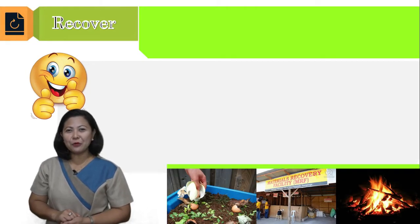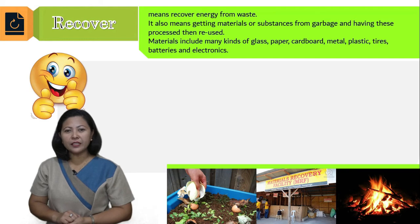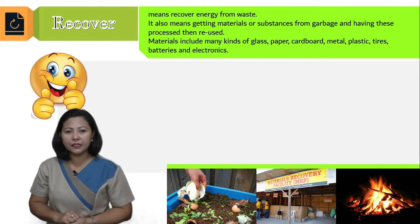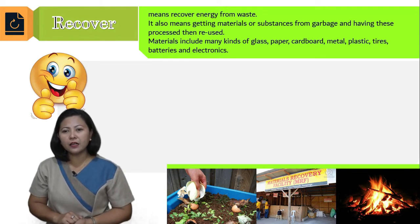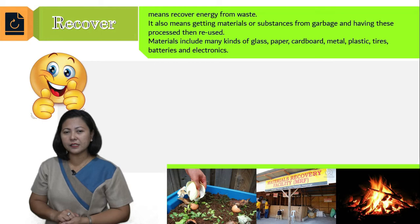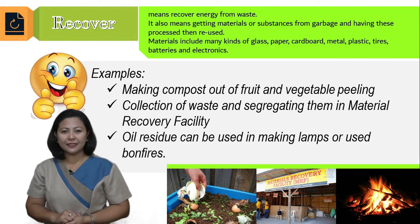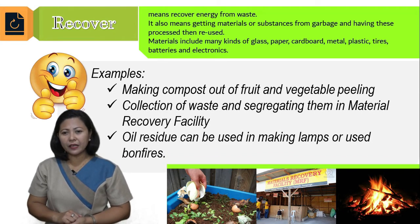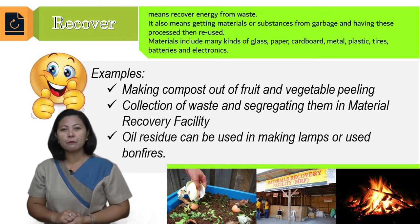Now let's have the final component of waste management: recover. To recover means to recover energy from waste. It also means getting materials or substances from garbage and having them reused. Materials include many kinds of glass, paper, cardboard, metal, plastic, tires, batteries, and electronics. Examples of recover include making compost out of fruit and vegetable peelings, collecting and segregating waste at a material recovery facility (MRF), and using oil residue to make lamps or for bonfires.